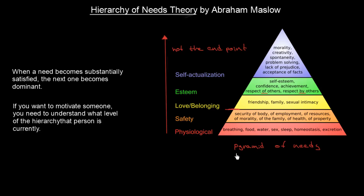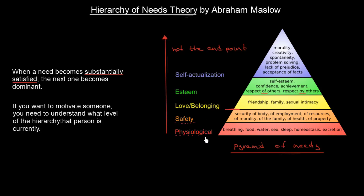Now, having gone through this pyramid of needs, which is essentially Maslow's theory, what is important to mention — especially in sociology or organizational behavior — is that when a need becomes substantially satisfied, the next one becomes dominant. When we are substantially fulfilled in safety, we start seeking friendship and family. When satisfied physiologically, we start caring about safety.